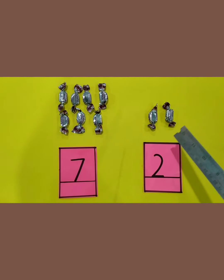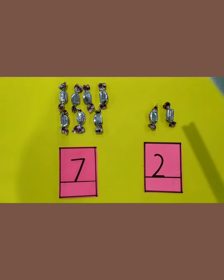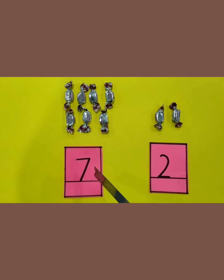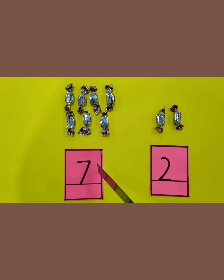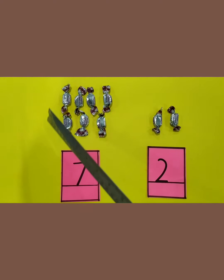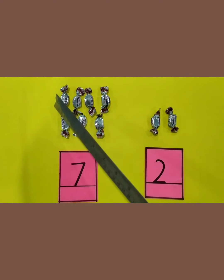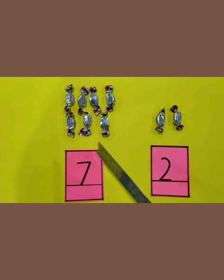अब आप ma'am को बता सकते हो which is the bigger number. इन दोनों में से कौन सा number बड़ा है? Yes, 7 is bigger. 7 बड़ा है क्योंकि इनकी quantity ज़्यादा है। So हम बोलेंगे 7 is bigger than 2 and 2 is smaller than 7. 2 जो है वो 7 से छोटा है क्योंकि इन toffees की quantity कम है।